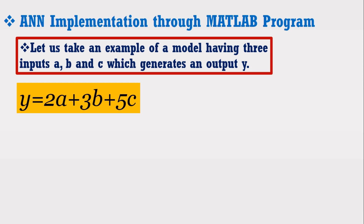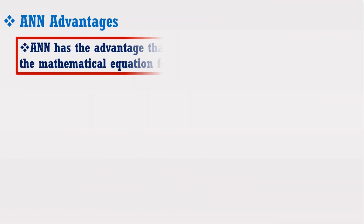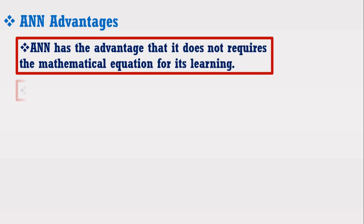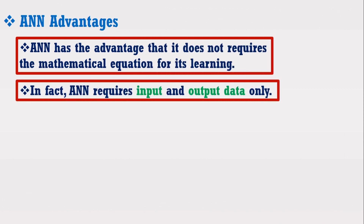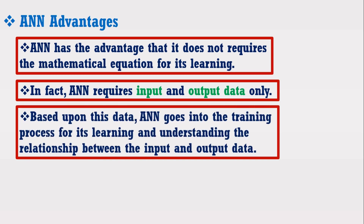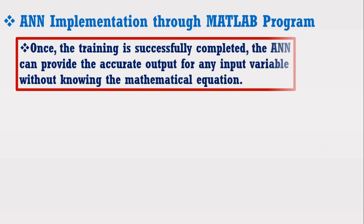At this stage, I want to highlight the advantage of Artificial Neural Network: ANN does not require the mathematical equation for its learning. In fact, ANN requires input and output data only. Based upon this data, the ANN goes into a training process for learning and understanding the relationship between the input and output data. Once the training is successfully completed, the ANN can provide the accurate output for any input variable without knowing the mathematical equation.